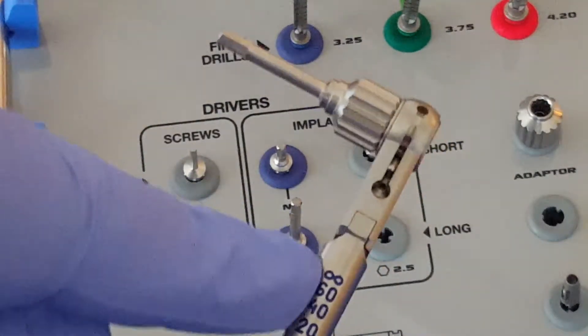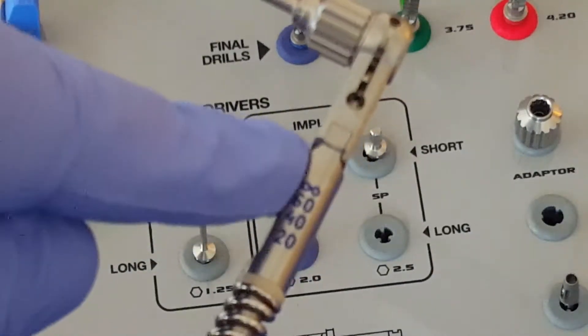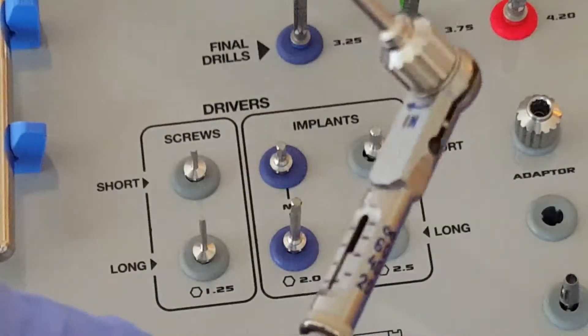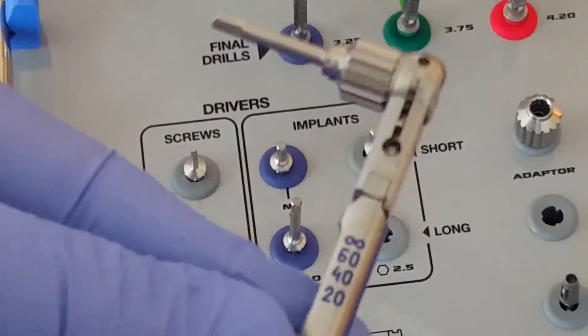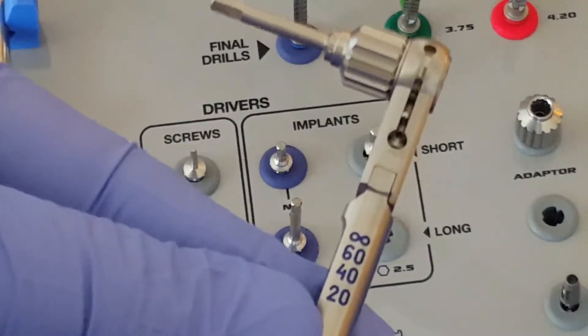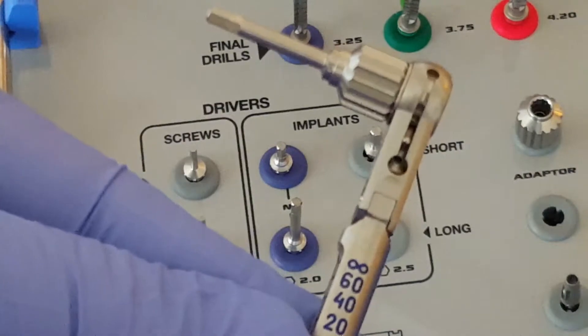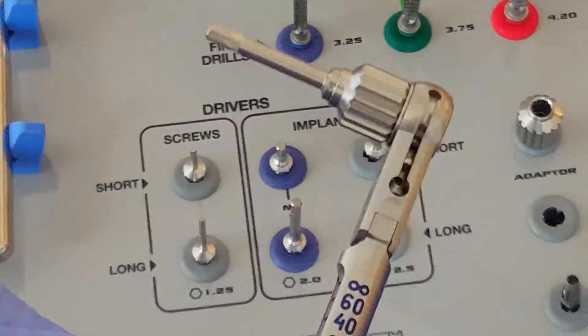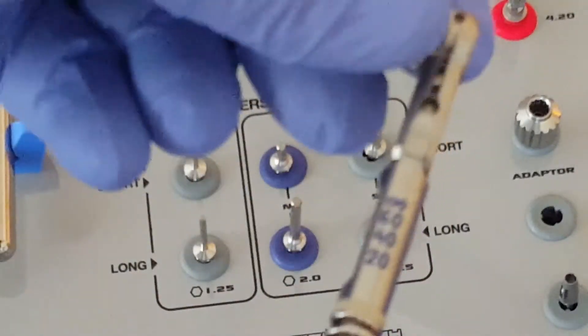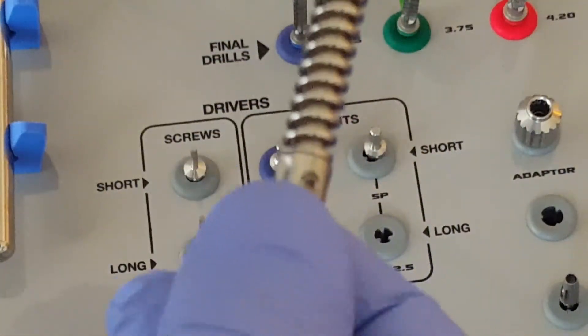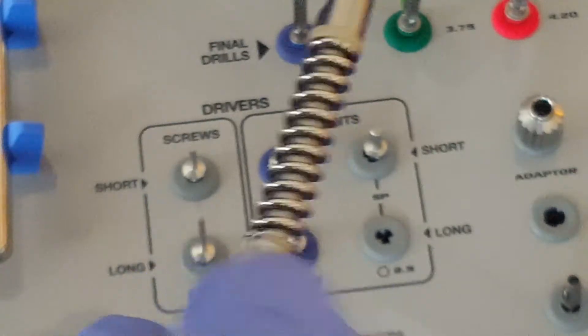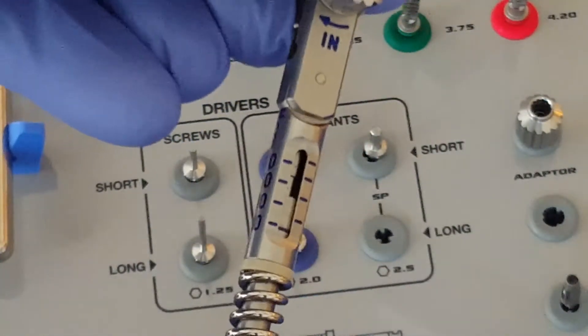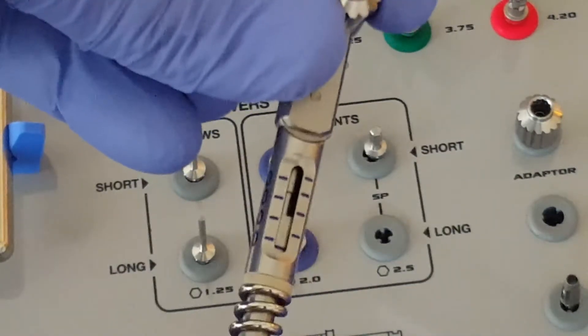Now we can utilize these numbers, 20, 40, 60, 80 newton centimeter, to set the appropriate insertion torque. For the Paltop implants, we generally recommend not to exceed between, or like to be between 30 and 40 newton centimeter. The adjustment of this can be done by rotating the handle. When you rotate it, it will change the position of the setting.